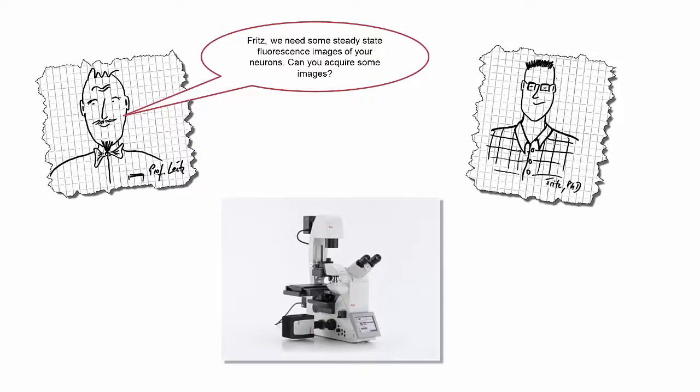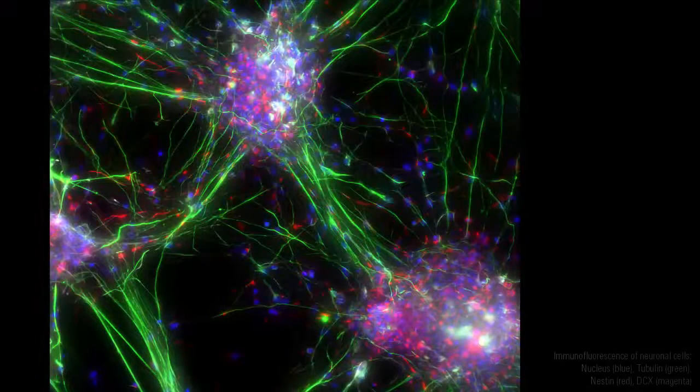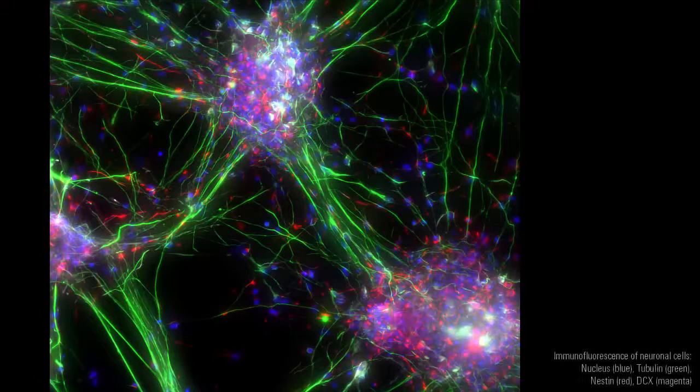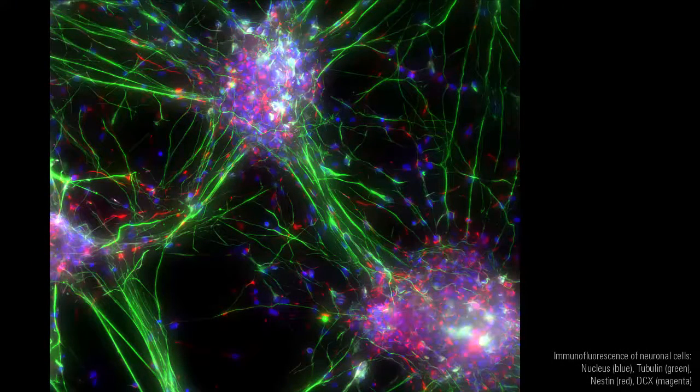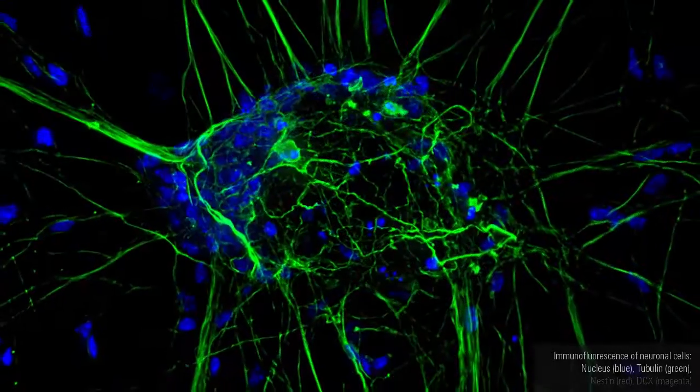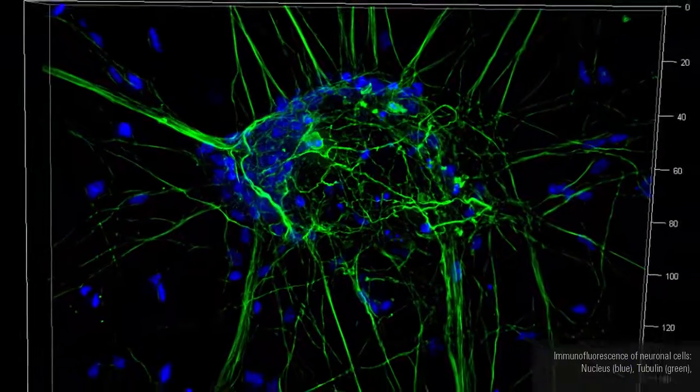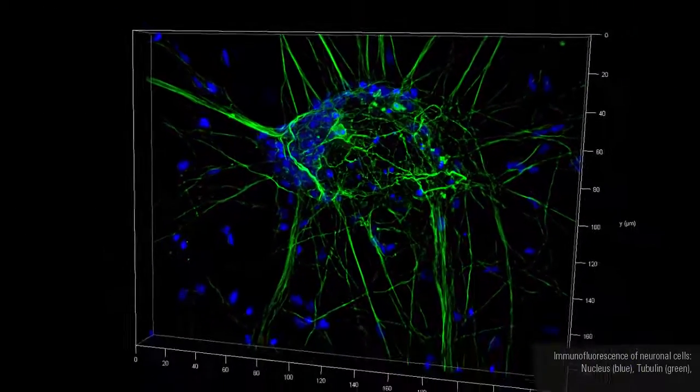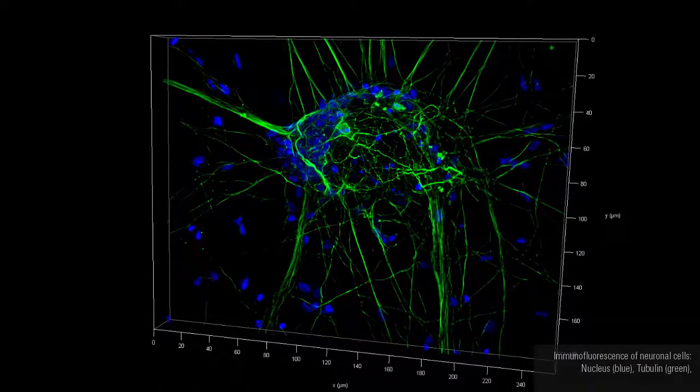Fritz, we need some steady-state fluorescence images of your neurons. Can you acquire some images? Sure, it's a piece of cake with our Leica DMI8. Fritz has used the Leica DMI8 to acquire these images of four-color fluorescently immunostained neurons. He has also acquired a Z-Stack and made a 3D reconstruction of double-stained neurons using LASX software.